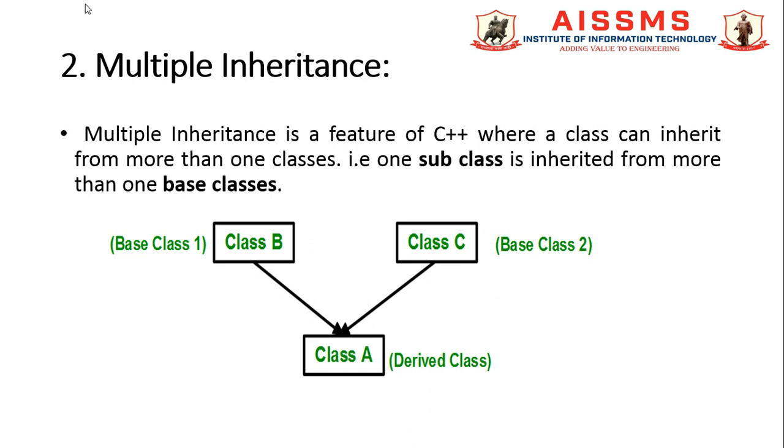If the base class and the derived class have functions with the same name, then only the members of the derived class are called through the object of the derived class. This is called the ambiguity in single level inheritance.